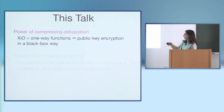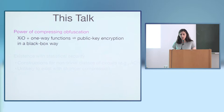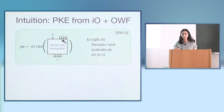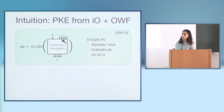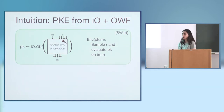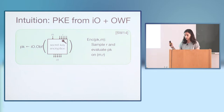Another reason to look at XIO plus one-way functions to public key encryption is that transforming secret key crypto into public key crypto was one of the original motivating applications of IO, brought up even before IO was formalized. This really shows that XIO in a black box model is quite weak. Here's some intuition on why XIO might not suffice for public key encryption. Let's look at the transformation from one-way functions and IO to public key encryption: the public key for the scheme is just an IO obfuscation of the encryption circuit of a secret key scheme. To encrypt a message, you run this obfuscated circuit on the message and some randomness, giving the ciphertext. Sahai and Waters showed that for a specific secret key scheme, this is secure public key encryption.